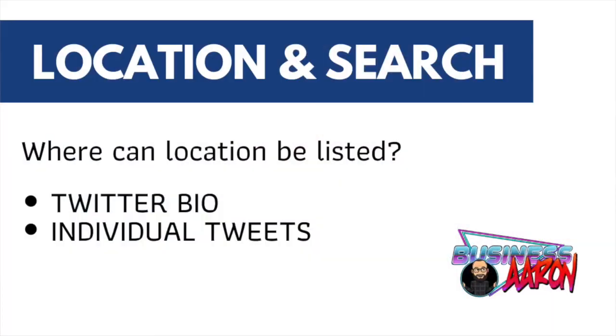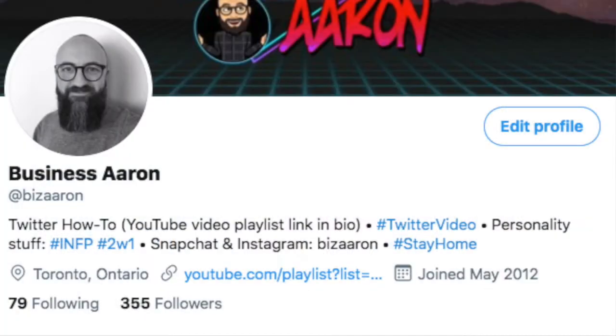Let's talk about location-based search on Twitter. There are two places where your Twitter location can be: it can be in your bio and it can be in individual tweets. When I say location, I mean a city — not the exact location of your house or where you happen to be tweeting from. If you look at my bio, you'll see it says Toronto, Ontario.